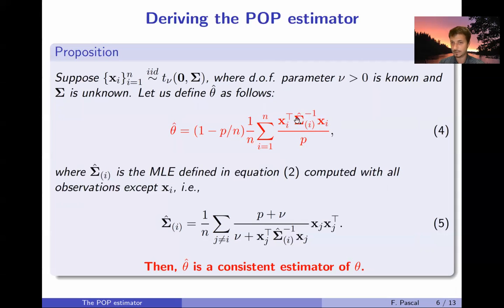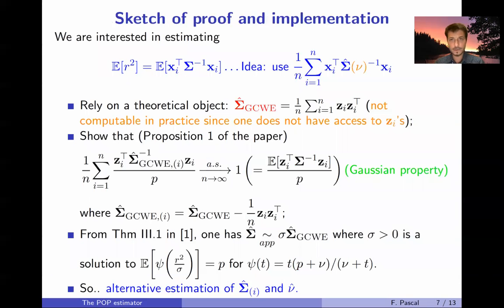This subscript i defines the M-estimator associated to the T-distribution, the one I've presented before, but for which we removed the i-th observation. And what we have proved in the paper is that deriving this estimator we can also show that this is a consistent estimator of theta. And as I said previously, having this consistent estimator of theta allows to have a consistent estimator of nu.